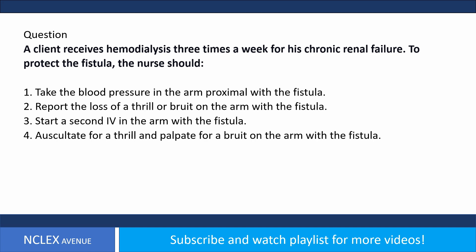A client receives hemodialysis three times a week for chronic renal failure. To protect the fistula, the nurse should: one, take the blood pressure in the arm proximal to the fistula; two, report the loss of a thrill or bruit on the arm with the fistula; three, start a second IV in the arm with the fistula; four, auscultate for a bruit and palpate for a thrill on the arm with the fistula.